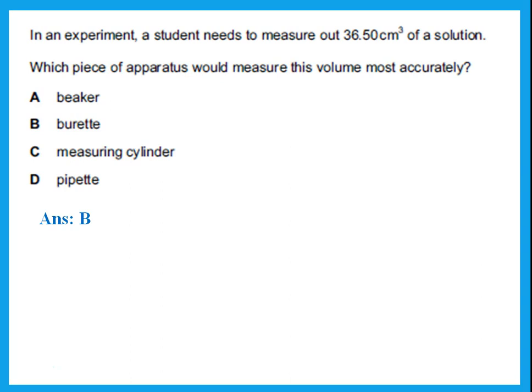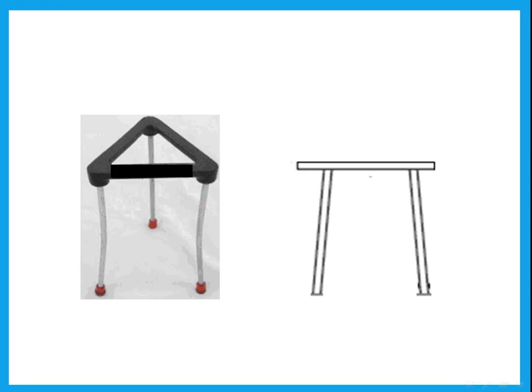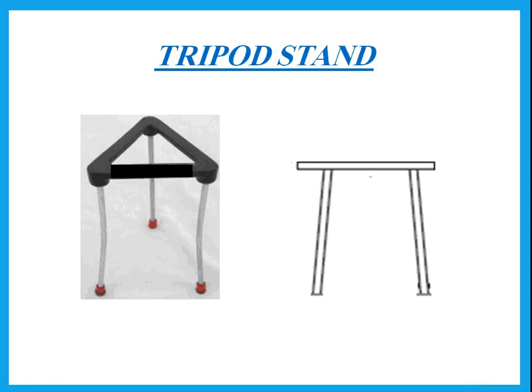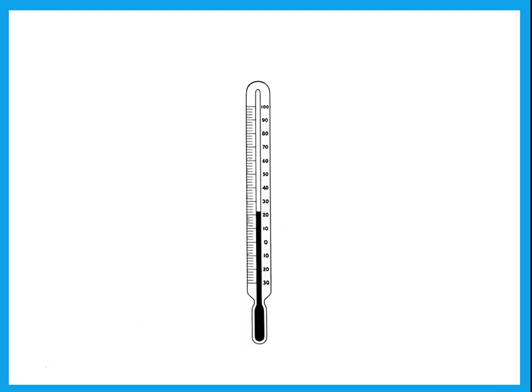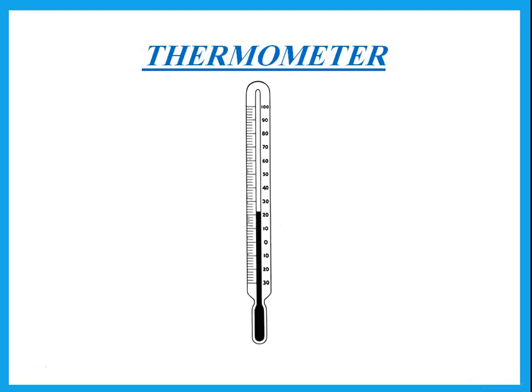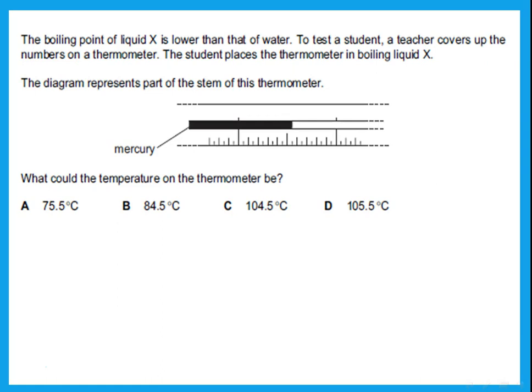What is this apparatus called — the one where you put the beaker on top and heat it from the bottom? This is called a tripod stand. It is usually drawn with two legs as shown. The burette has a tap — but what is that long thing holding it upright? That is the stand. What is this? You should know this is a thermometer — please know the spelling.